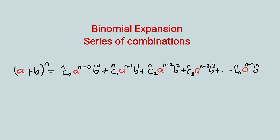Hello, good morning viewers. Still on binomial expansions. So far we have seen the general formula used to expand binomial terms. But the question is: what if a is equal to 1? The simplification will be a little bit easier. So let's substitute a equal to 1 in this series.